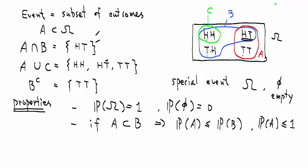The third one, also important, is if I have two events that do not overlap, meaning their intersection is the empty set, then if I look at the probability of the union of the two, I want to include all the outcomes in either A or B, but there is no overlap. And this is equal to the probability of A plus the probability of B.